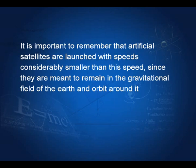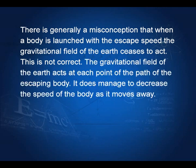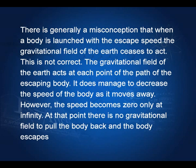Artificial satellites are launched with speeds considerably smaller than the escape speed because we do not want them to escape the gravitational field — we want them bound to the earth. There is a misconception that when a body is launched with the escape speed, the gravitational field ceases to act. This is not so. The gravitational field acts at each point of the escaping body's path, decreasing its speed; the speed becomes zero only at infinity, at which point there is no field to pull it back.